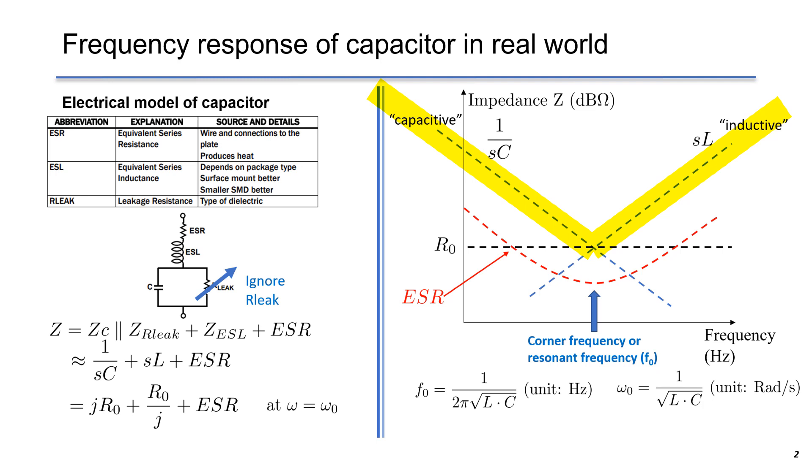Now we have two magnitude asymptotes. The frequency at the intersection is called the corner frequency or resonant frequency, annotated as F0. At frequency F0, the impedance of inductor and capacitor will cancel out. Their magnitude is called R0, which is the characteristic impedance.